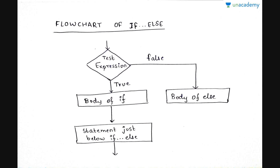Let us see the flowchart of if-else. If the test expression comes to be true, then the body of if is evaluated. If it comes to be false, the body of else is evaluated. After either branch, the remaining code is evaluated and the program ends.